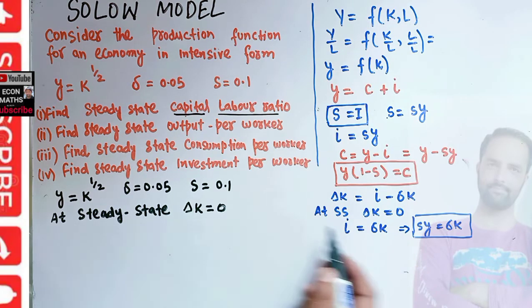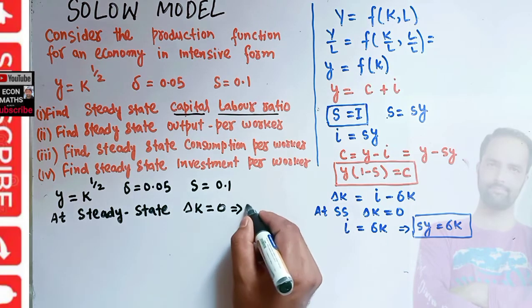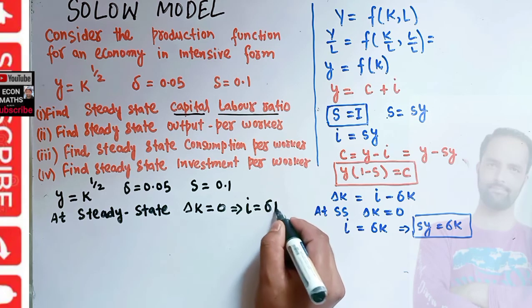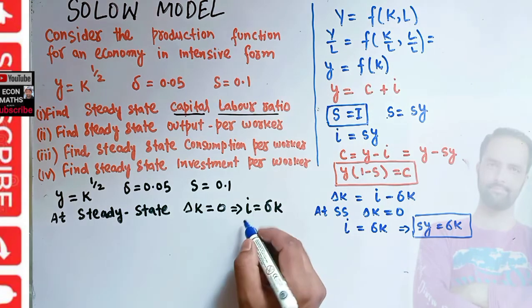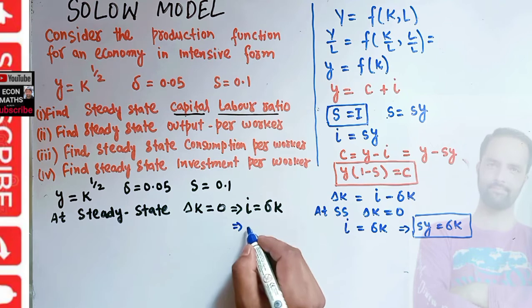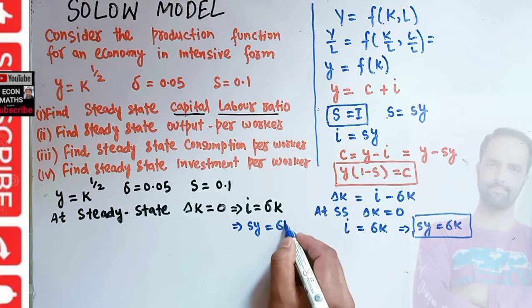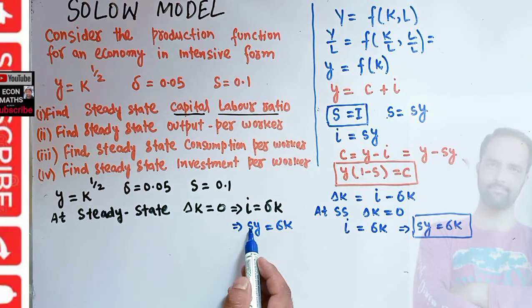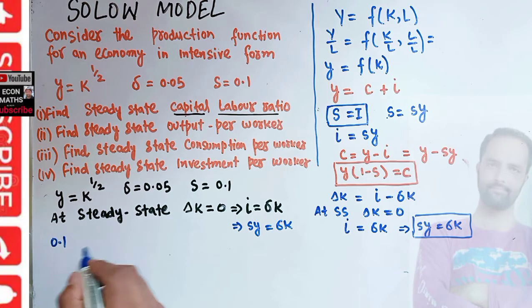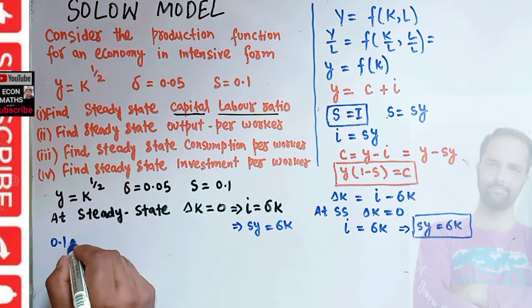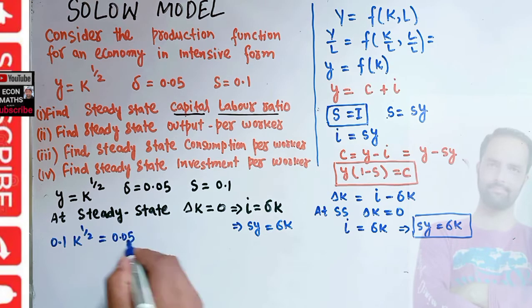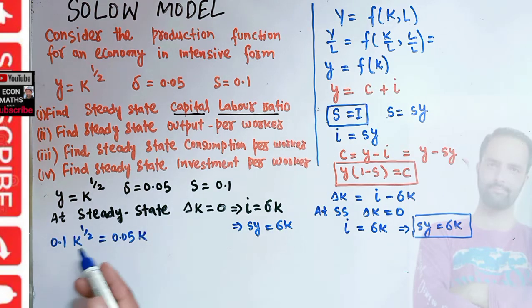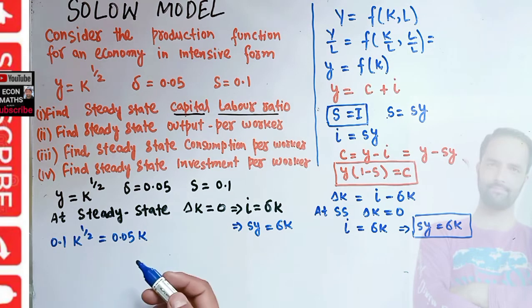If delta-k equals zero, this implies investment per worker is exactly equal to the depreciation of capital. Since i equals s times y times delta-k, we can write: s times y equals delta-k. Substituting, savings rate 0.1 times y — which is k to the power one upon two — equals depreciation rate 0.05 times k.